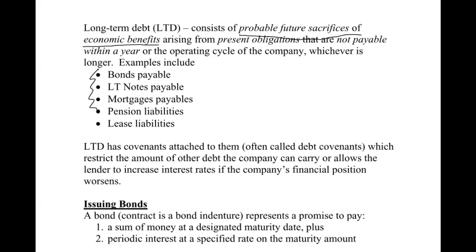A lot of times you'll find long-term debt has what we call covenants attached to them — debt covenants — which restrict the amount of other debt the company can carry, or allow the lender to increase the interest rate if the company's financial position worsens. A common one would be a restriction on what the debt-to-equity ratio can be, and if the borrower violates that, the lender could call the loan, but typically they will renegotiate and demand a higher interest rate as a result.